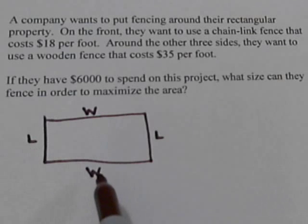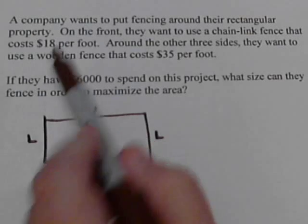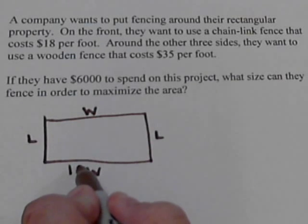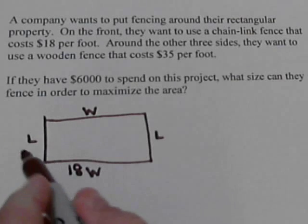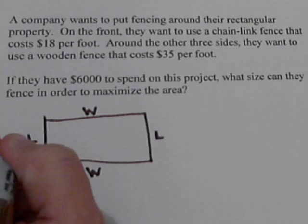And it really doesn't matter which one is which, so let's make this the front side. So that's going to be $18 per foot. So it's going to be $18 for each foot of width. And the other three are all going to be $35.